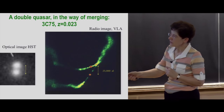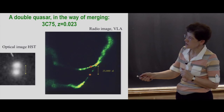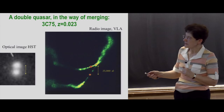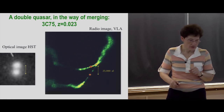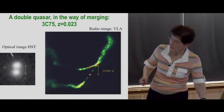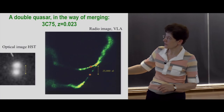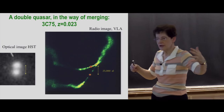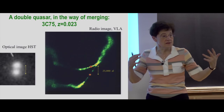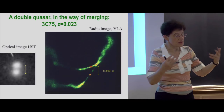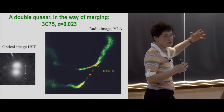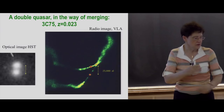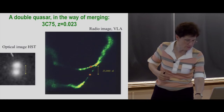You have the HST optical imaging of these two merging galaxies at 25,000 light years separation. If the radio jet is not straight, it's because the galaxies are moving in intergalactic space, which is a highly ionized medium — so you have like a wind, and the jets are pushed by ram pressure of that wind.